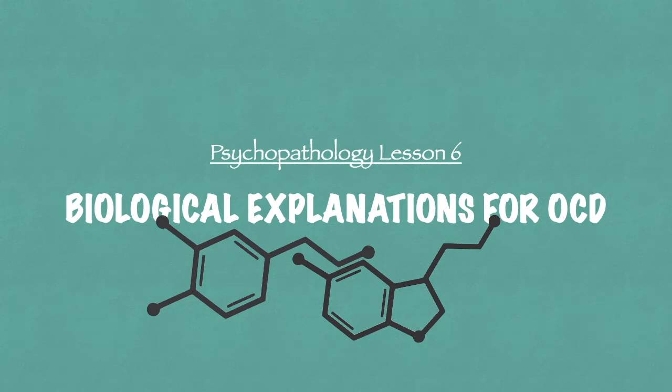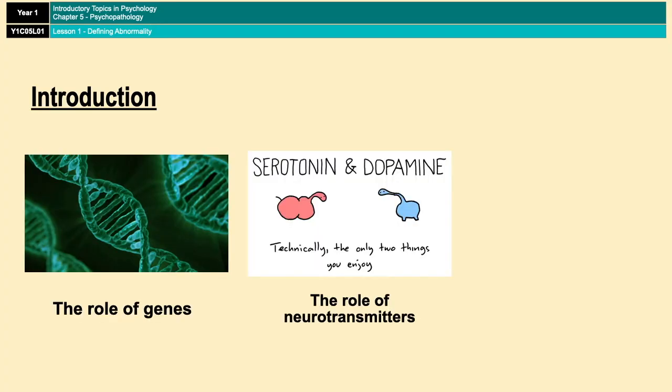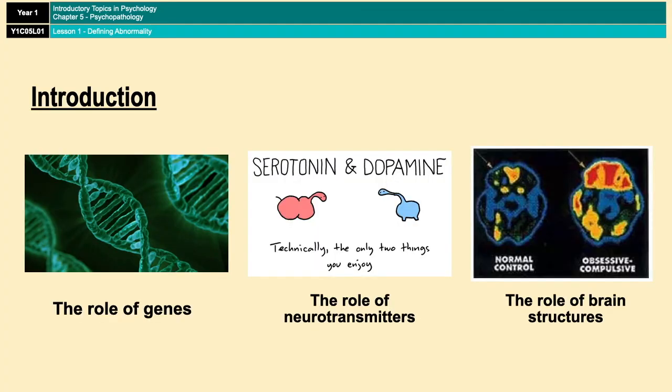Hello and welcome back to psychopathology lesson six. This is part two of the OCD topic. Watch out for the links popping up during this video, and there is also a link in the description section below so you can check out part one. In this video we're going to be looking at biological explanations for OCD: the role of genes, the role of neurotransmitters, and also the role of certain structures in the brain.